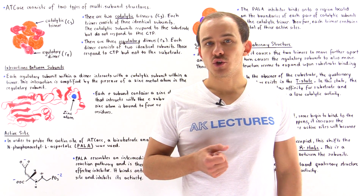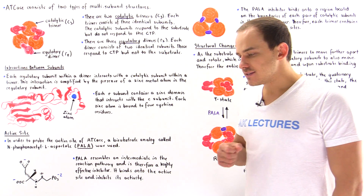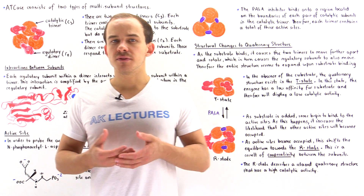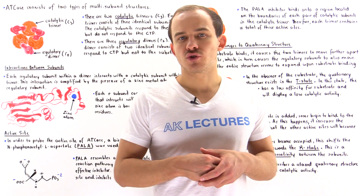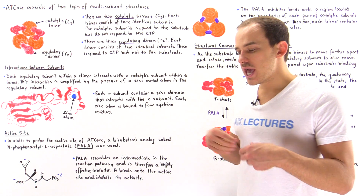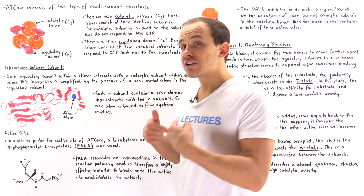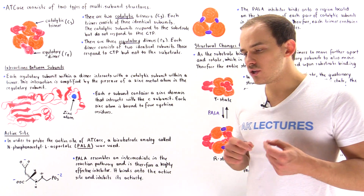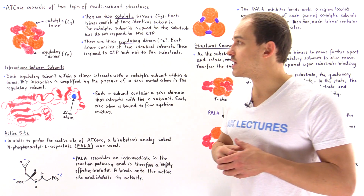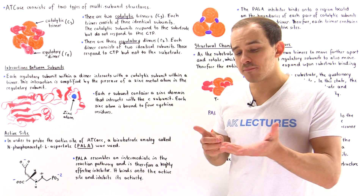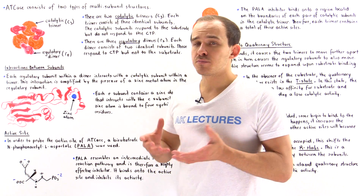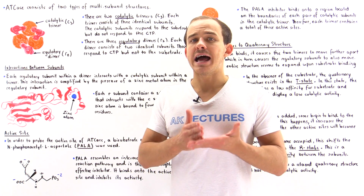Aspartate transcarbamoylase, or ATCase, is an enzyme found inside our cells that catalyzes the first step in the biosynthesis of pyrimidine-based nucleoside triphosphate molecules, such as CTP or cytidine triphosphates. This enzyme is controlled by CTP molecules because they can go back and bind onto special regulatory sites — allosteric sites — found on the enzyme, and that inhibits the activity of the enzyme. That's why we call aspartate transcarbamoylase an allosteric enzyme.